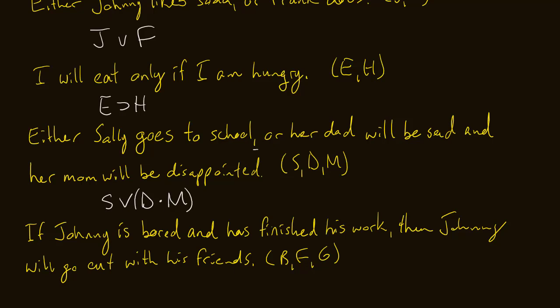'If Johnny's bored and has finished his work, then Johnny will go out with his friends.' Using B, F, and G. We've got a conditional and a conjunction. If Johnny is bored and finished — so B·F — then he'll go out with his friends, giving us (B·F)⊃G. Has anybody ever read The BFG? Great book, you should read it.